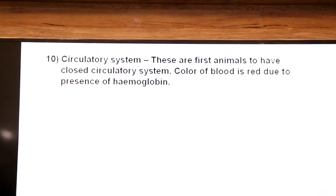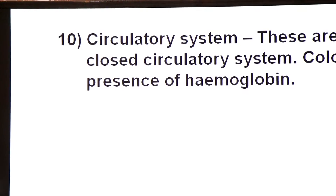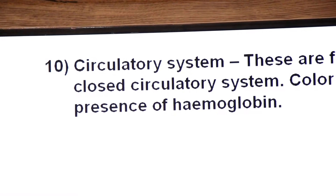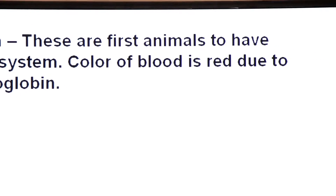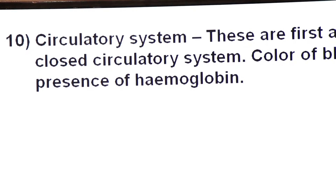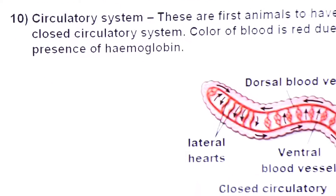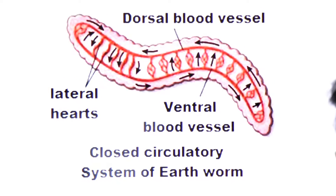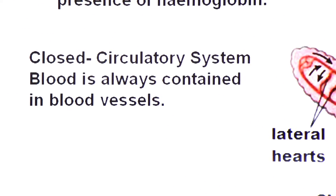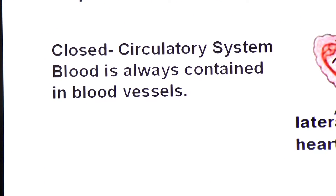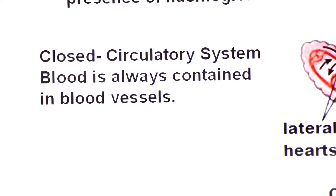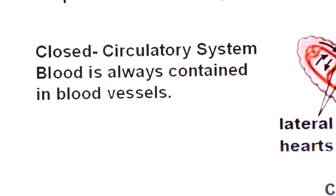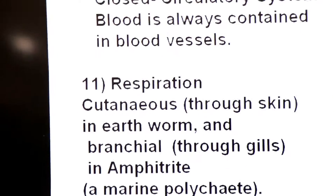Annelids are the first animals to have a closed circulatory system. The color of blood is red due to the presence of a pigment called hemoglobin. In a closed circulatory system, blood is always contained within blood vessels.